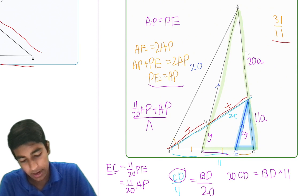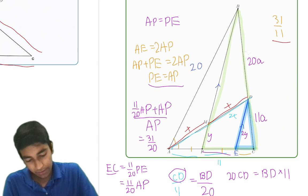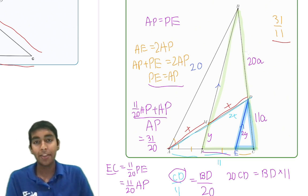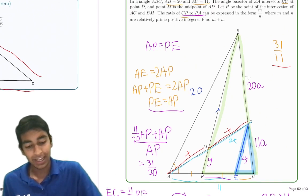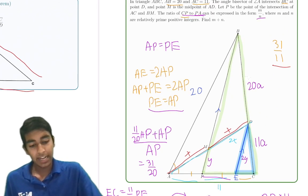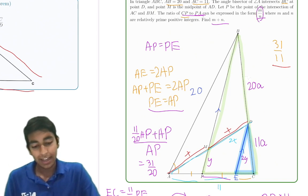It's the same thing. And now this is just 31 over 20. Because the numerator becomes 31 over 20 AP, and the denominator is just AP. So the answer is just 31 over 20. Which, because we're asked to find M plus N in the fraction M over N, it's just 31 plus 20 equals 51. A really cool problem.